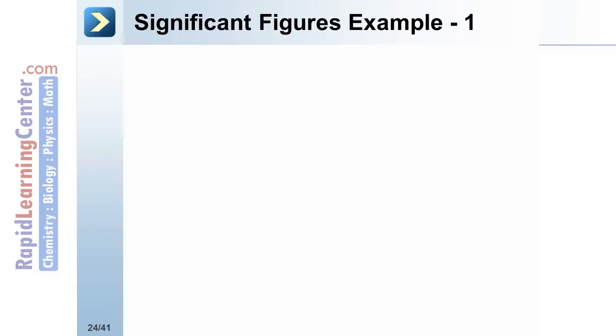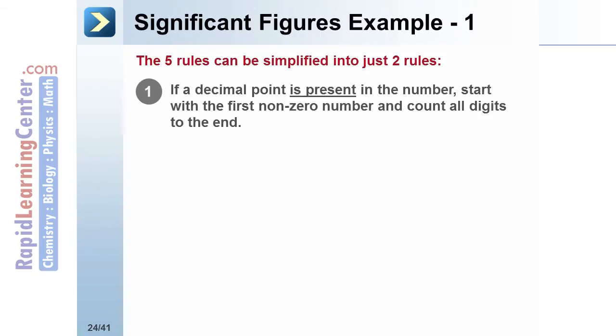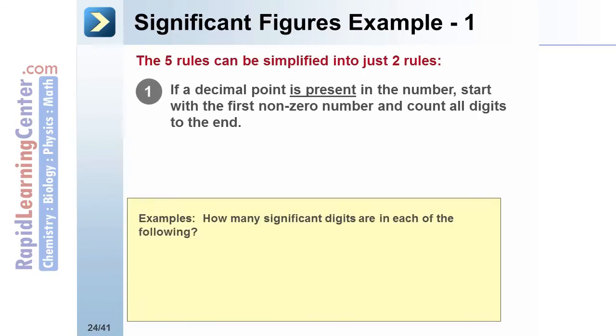However, these five rules can be simplified into just two summary rules that are easier to remember and work with. The first rule gives instructions on how to count significant figures if there is a decimal point anywhere in the number. If there is a decimal point, start counting with the first non-zero number and count all digits to the end.